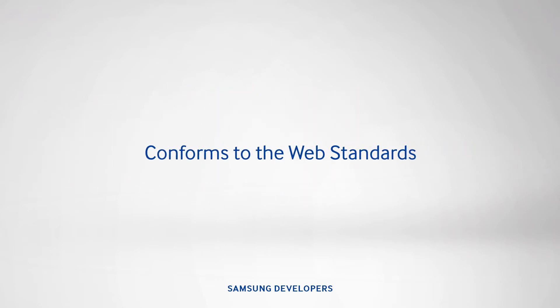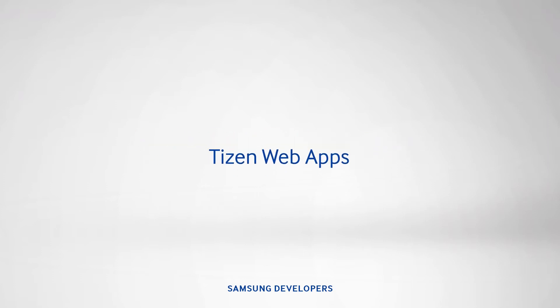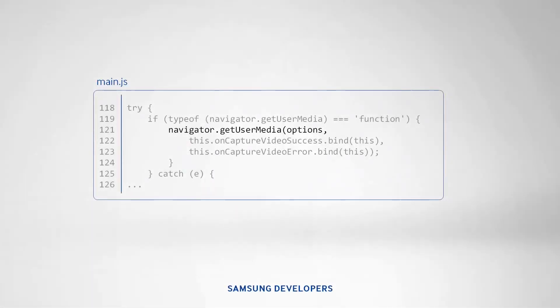As Tizen offers a platform that conforms to the latest web standards, you can expect this to be implemented and ready for use with Tizen web apps. As a good example of this, we're using the self-camera sample. The main code we'll need to make our self-camera work is navigator.getUserMedia, which comes from the media capture and streams mentioned earlier.